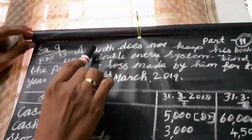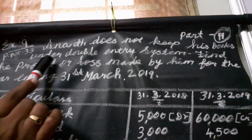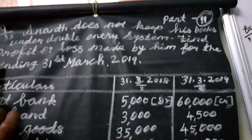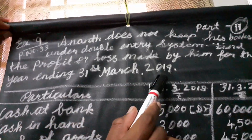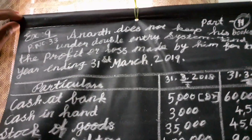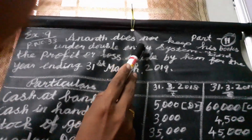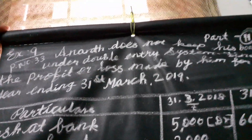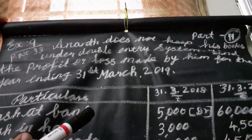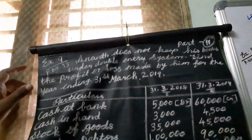See the board. Anand does not keep his books under double entry system. Find the profit or loss made by him for the year ending 31st March 2019. The particulars given are for Anand, who has not prepared his books under the double entry system. From these incomplete records, we want to find out the profit or loss.